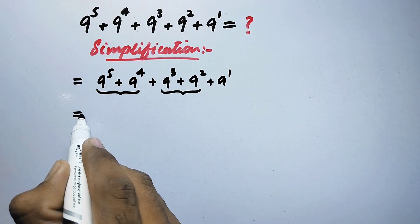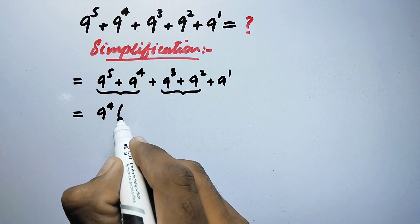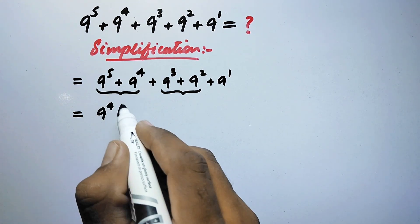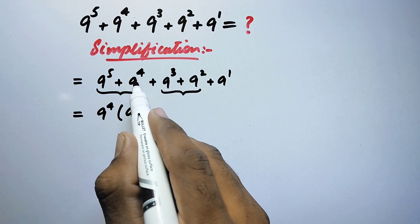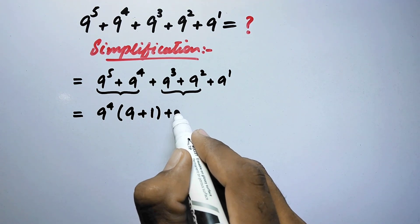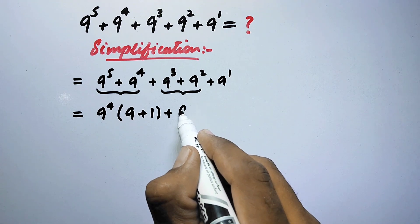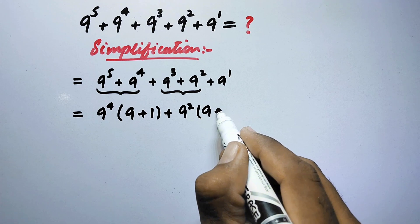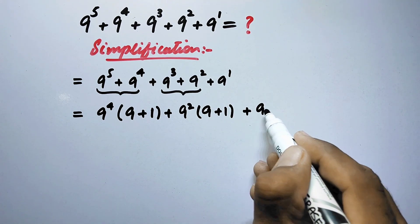So here we will write 9 to the power 4, and what is left will be 9 to the power 1, which can be written as 9, plus 1. Then from the next two values we will take 9 squared as common factor, so here we will also have 9 plus 1, plus the remaining 9.